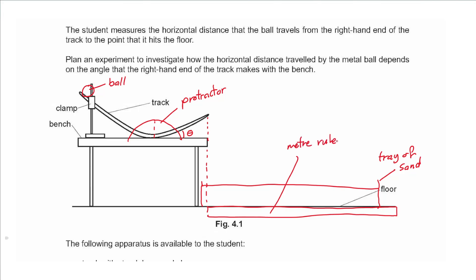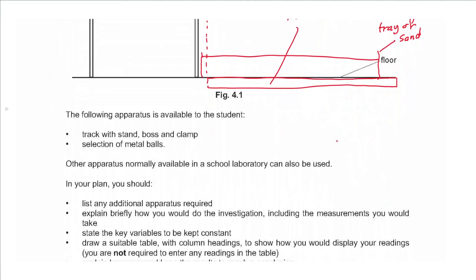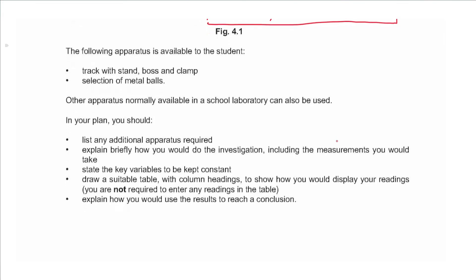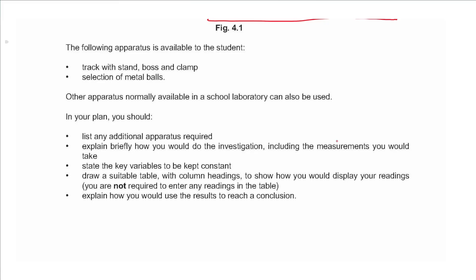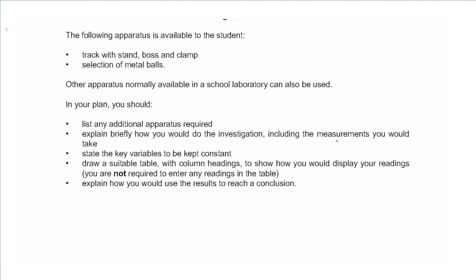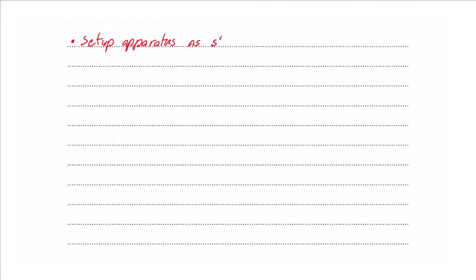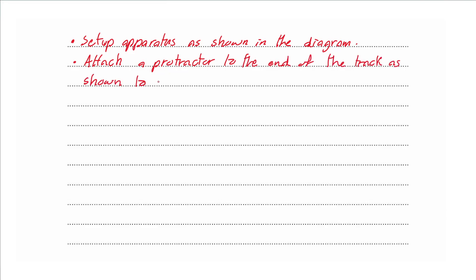The available apparatus includes a track with stand, boss and clamp, and a selection of metal balls. In your plan, list additional apparatus, explain how you would do the investigation including measurements, state key variables to keep constant, draw a table with column headings, and explain how to use results to reach a conclusion.